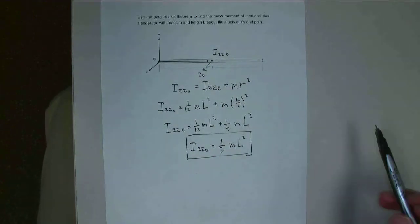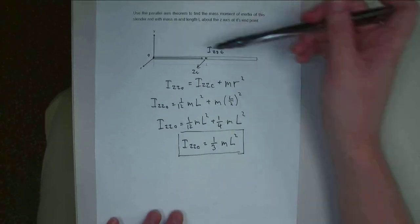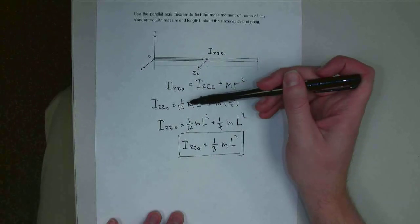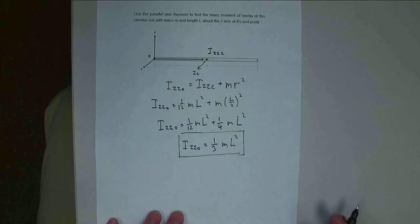So using the parallel axis theorem, I can see that if I move from the centroid out to the end, I go from 1/12 m l squared for my mass moment of inertia to 1/3 m l squared for my mass moment of inertia. So that's all I have for this video. Thank you for watching, and I hope to see you again.